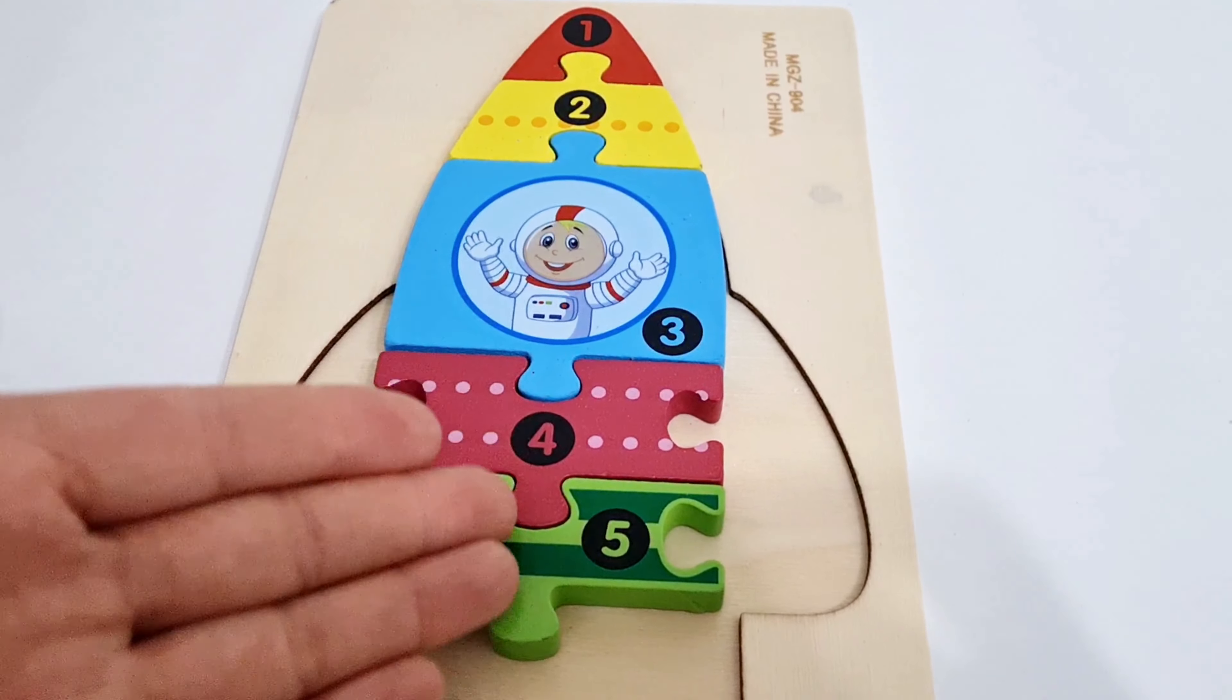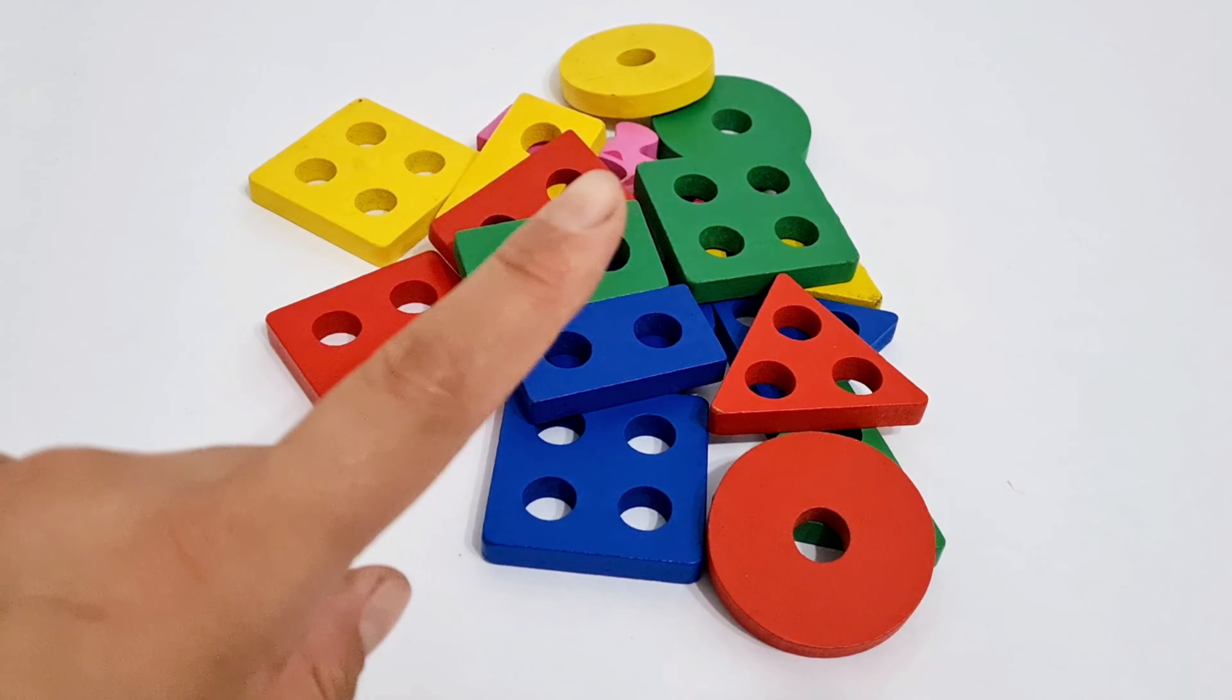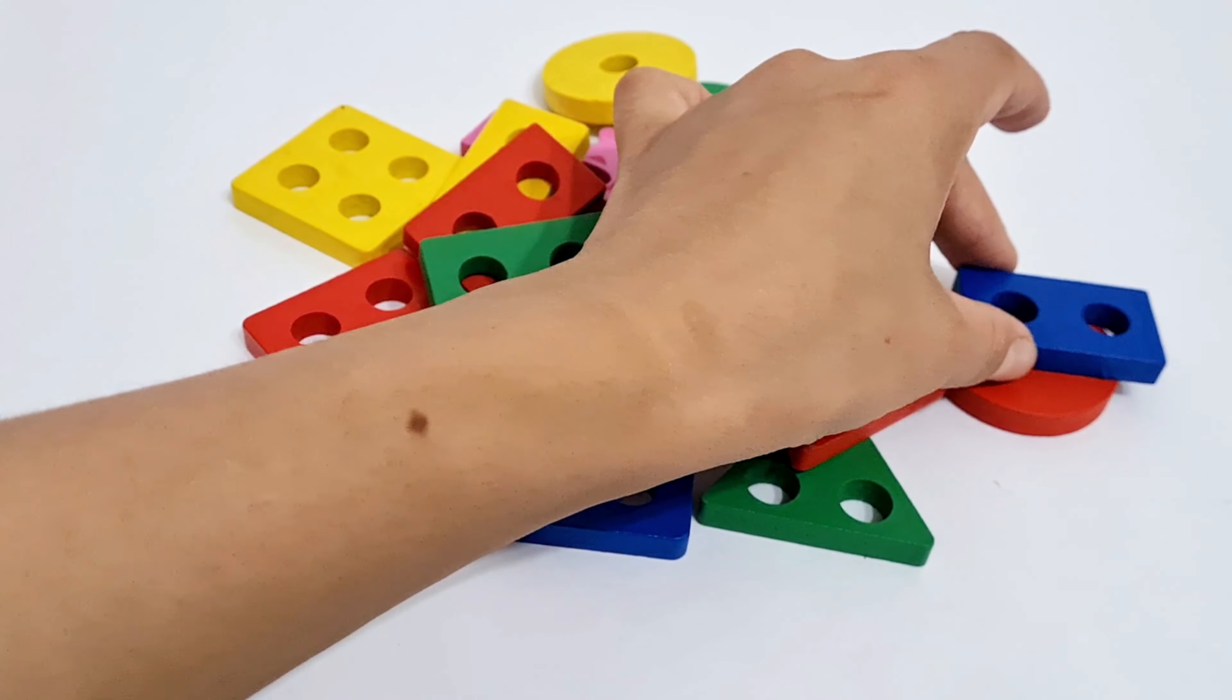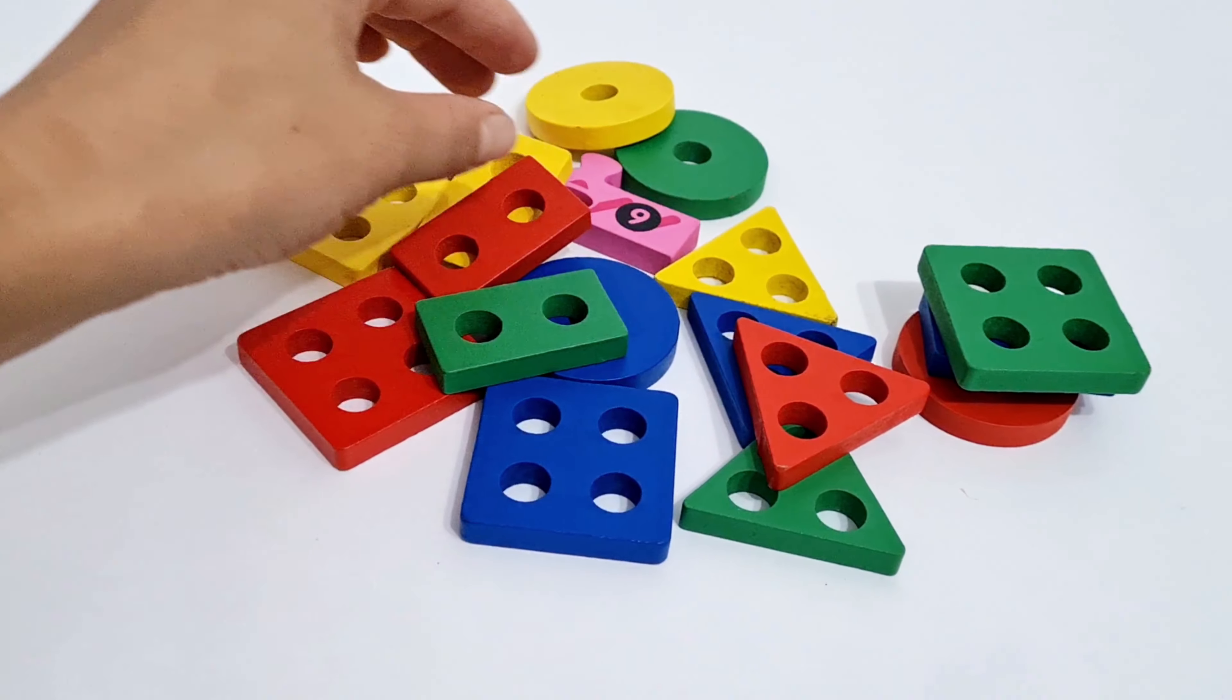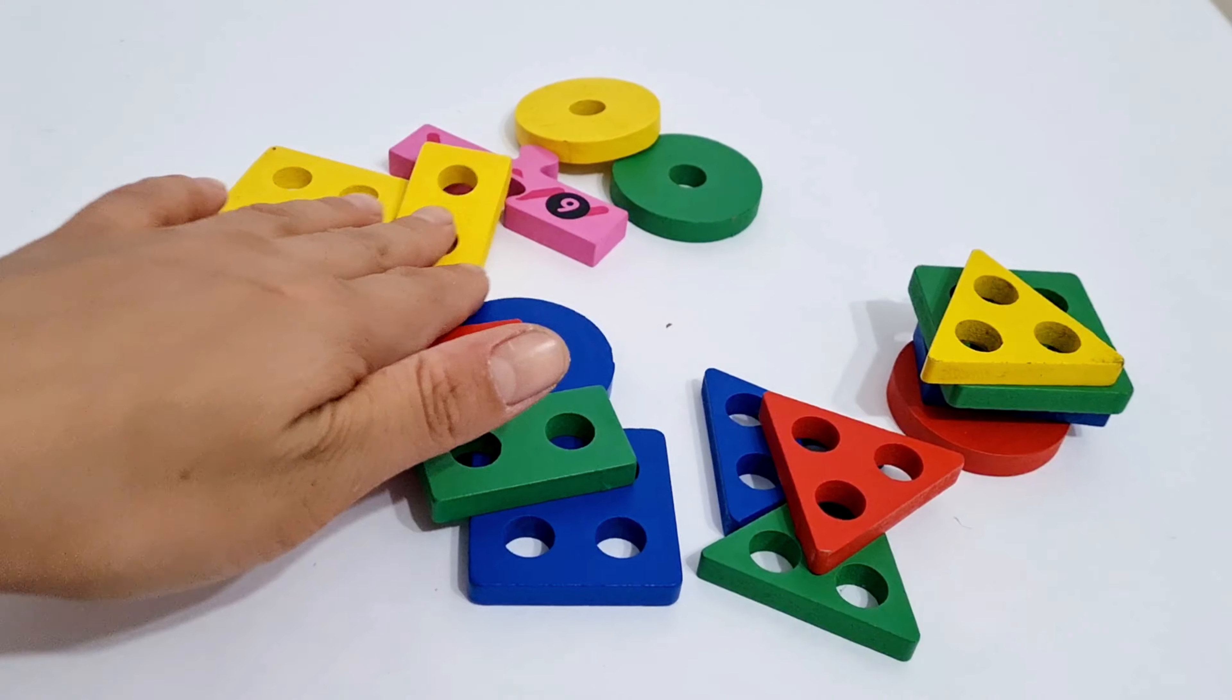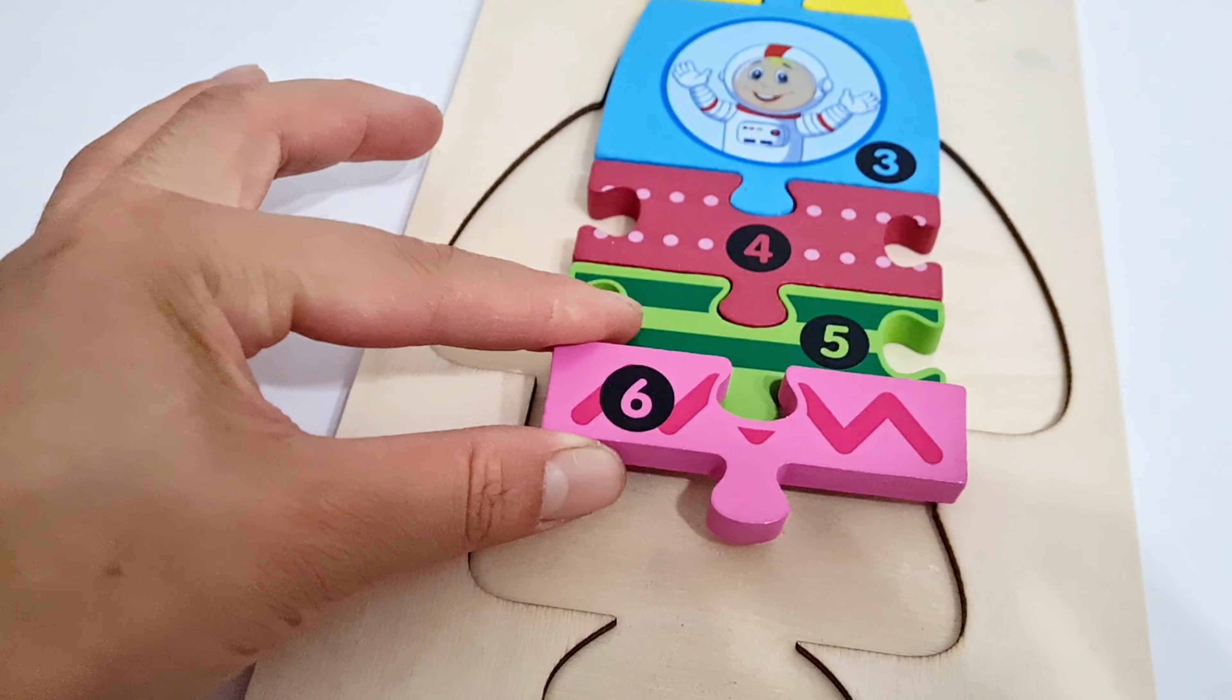Yes. We need next number. Oh. Here colorful shapes are mixed. Maybe our next puzzle is here? It's red circle, blue rectangle, green square, and yellow triangle. Wow guys. Look. I see something. Yes. Our next piece of puzzle is here. Number six. Number six.